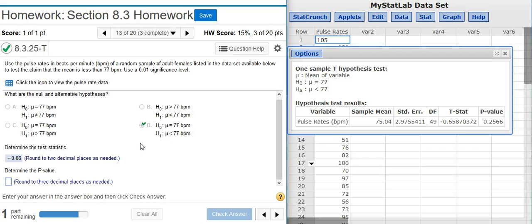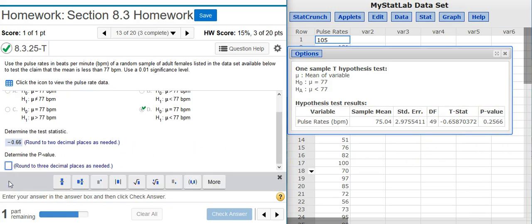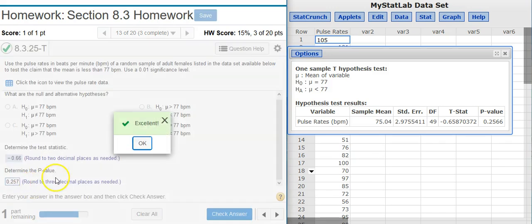Now, the next part asks me to determine the p-value. The p-value is back here in the results window. It's always the last value listed in the results table. I'm asked to round to three decimal places. Excellent!